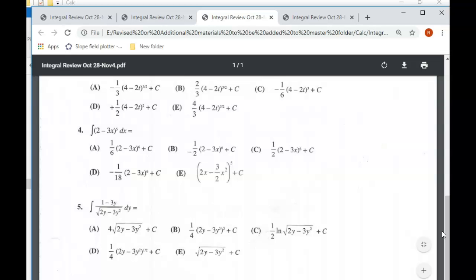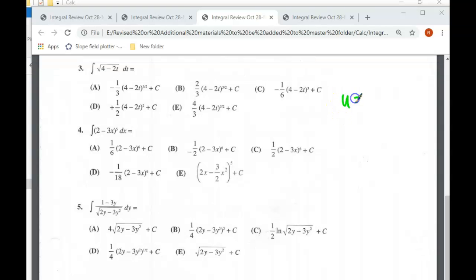A little bit of a trick involved there. On number 5, what I would do is I would say, okay, u is equal to 2y minus 3y squared. The reason I would do that is because when we take the derivative of u with respect to y, we end up with 2 minus 6y.